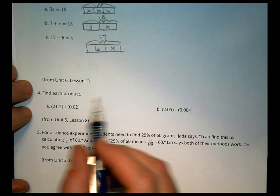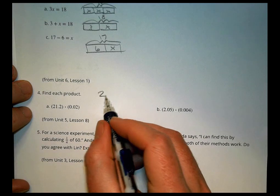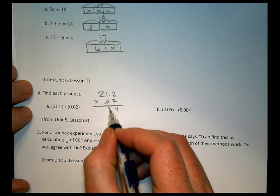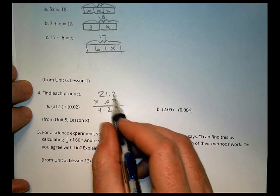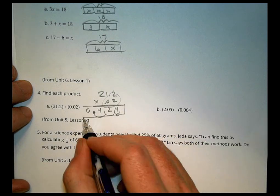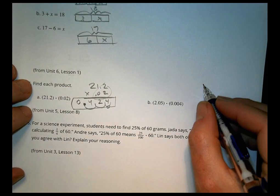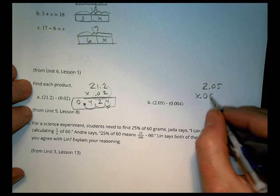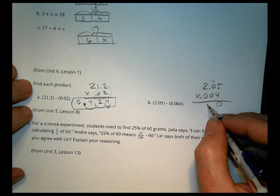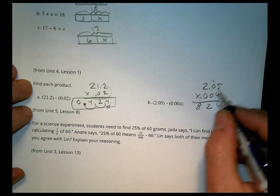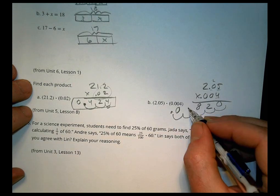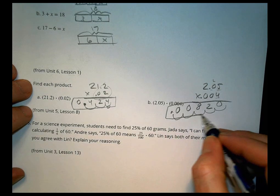For four, we're going to find each product. 2.12 times .002. We're going to go to 2.2 times .02. 2 times 2 is 4. 2 times 1 is 2. 2 times 2 is 4. 0. All the way down. And we have 1, 2, 3 by the decimal. So we'll go 1, 2, 3. And we have 0.424 as a solution there. For B, we do 2.05 times .004. 4 times 5 is 20. 4 times 0 is 0. Bring down the 2. And 4 times 2 is 8. Now I have 1, 2, 3, 4, 5 behind the decimal. So I'm going to go 1, 2, 3, 4, 5 decimal. Fill in these spaces with zeros. So I have .00820.